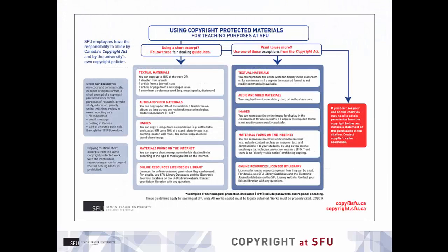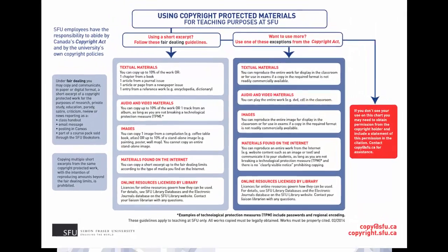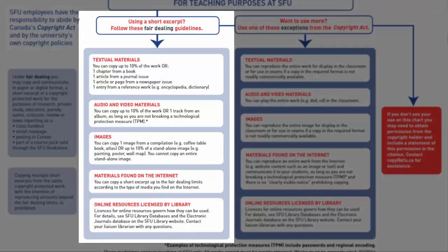This infographic, which is available on the Copyright website, lays out the limits on copying and using third-party materials for your courses, both under SFU's Fair Dealing Policy and under the Educational Institution Exceptions in the Copyright Act, which are actions specified in the Act that users at educational institutions can do that others can't, and they typically go beyond the limits of Fair Dealing. In the left column are the Safe Harbour limits for working under Fair Dealing at SFU. The maximum you can copy without permission is typically 10% of the work, or one chapter, article, or track, depending on the medium — you would use the option that works best for you. So if one chapter is more than 10%, you can still copy it, or if two chapters together make up only 8%, you can copy both chapters.